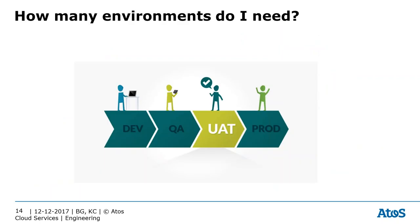Ask yourself how many environments you need. Even though you start small, the ideal number is at least four: a development environment for actual development, quality assurance for integration testing, user acceptance testing where users validate catalog items and services, and then production. We understand the cost of introducing four separate platforms, but based on experience from hitting many headaches with a limited number of platforms, this is definitely what we'd recommend if the resources are available.